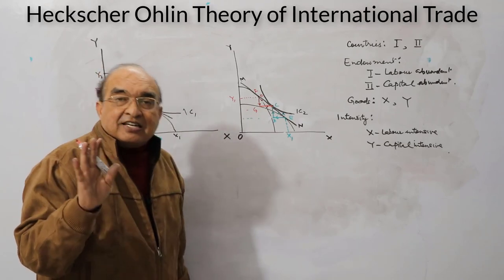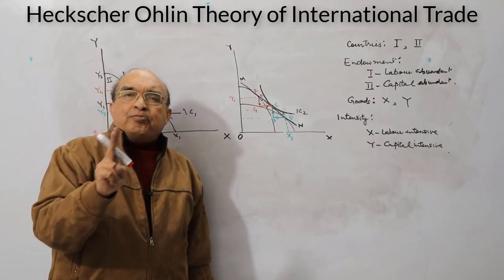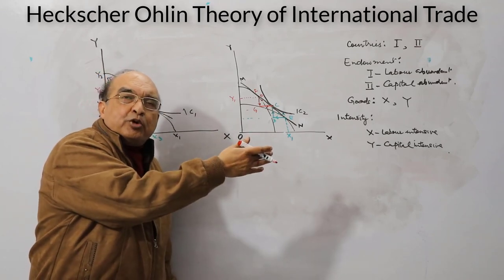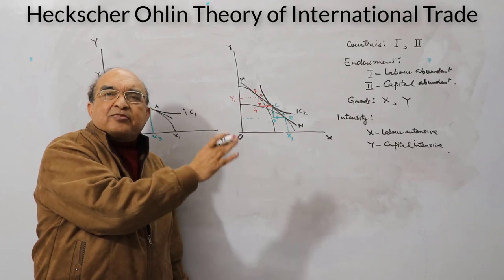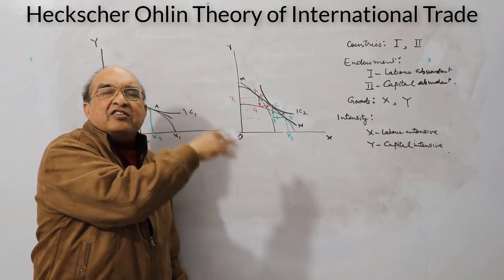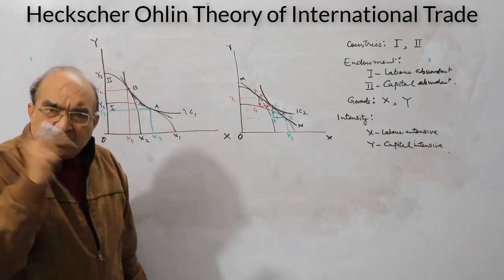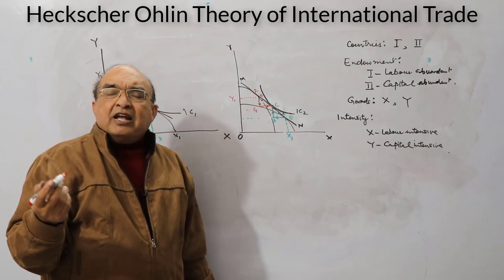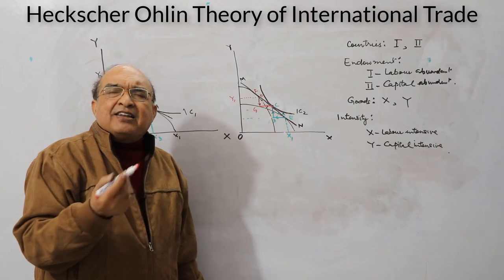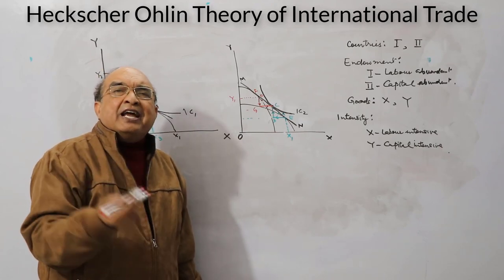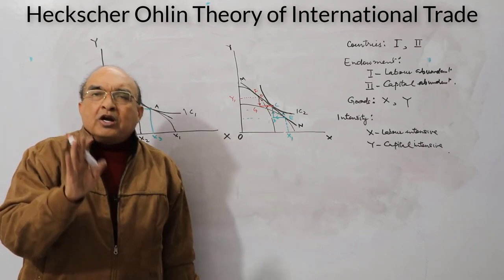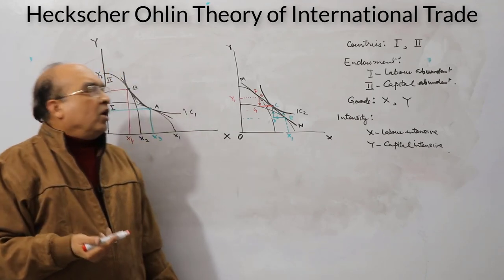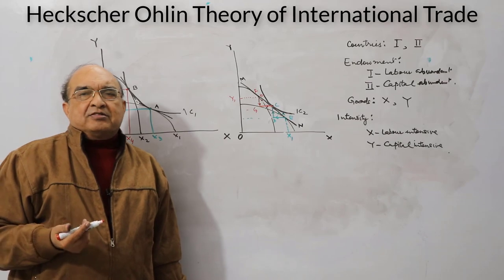Even after international trade, both countries continue to produce both goods — there is no complete specialization. Country One produces more of X and less of Y than it did before trade. Complete specialization would still yield gains over no trade, but those gains would be less than under partial specialization. This concludes the presentation of the Heckscher-Ohlin theory.